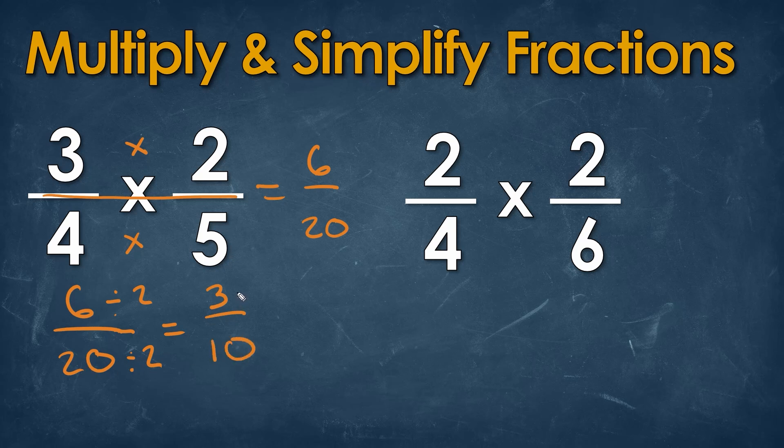Now, we can't factor this out anymore. 3 is a prime number, so all we could divide by is 3, and we can't divide the bottom by 3. So, our final answer will be 3 over 10.